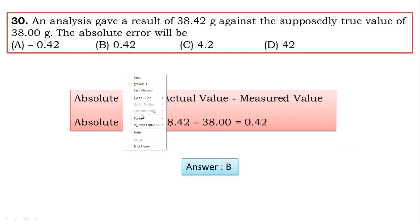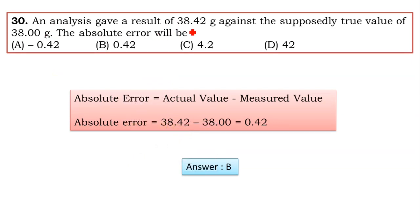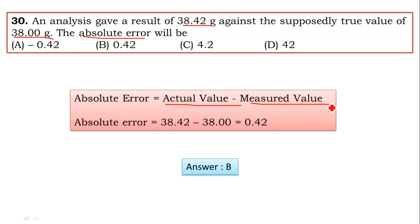Next question 30: An analysis gives a result of 38.42 grams against a true value of 38 grams. The absolute error is calculated as: absolute error = actual value − measured value = 38.42 − 38 = 0.42 grams. Hence answer B is correct.